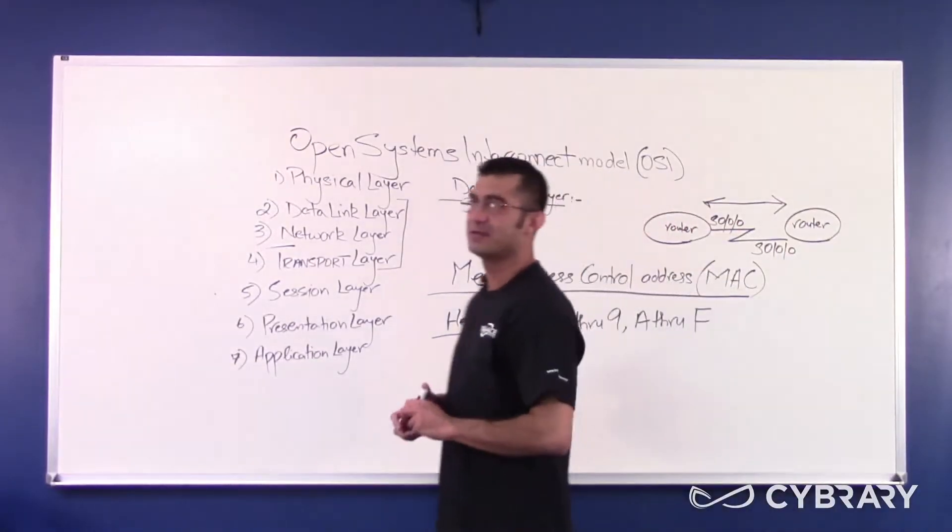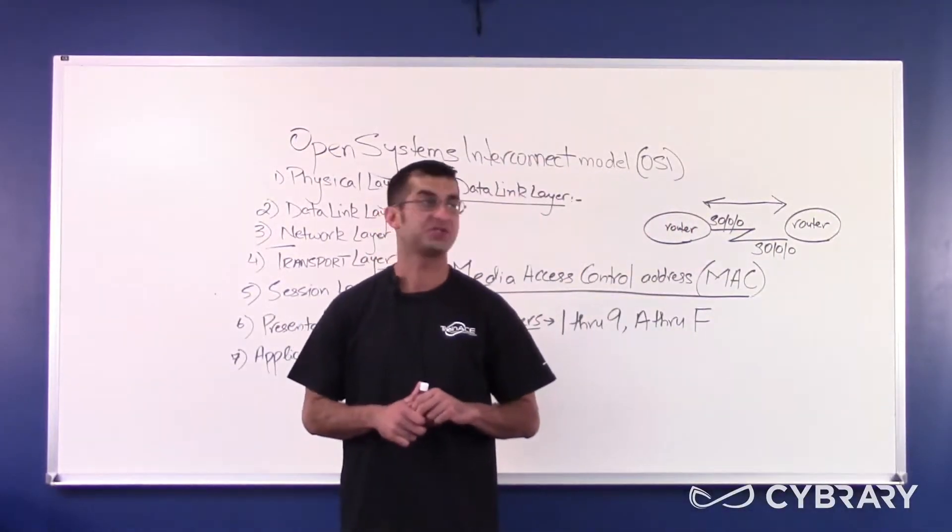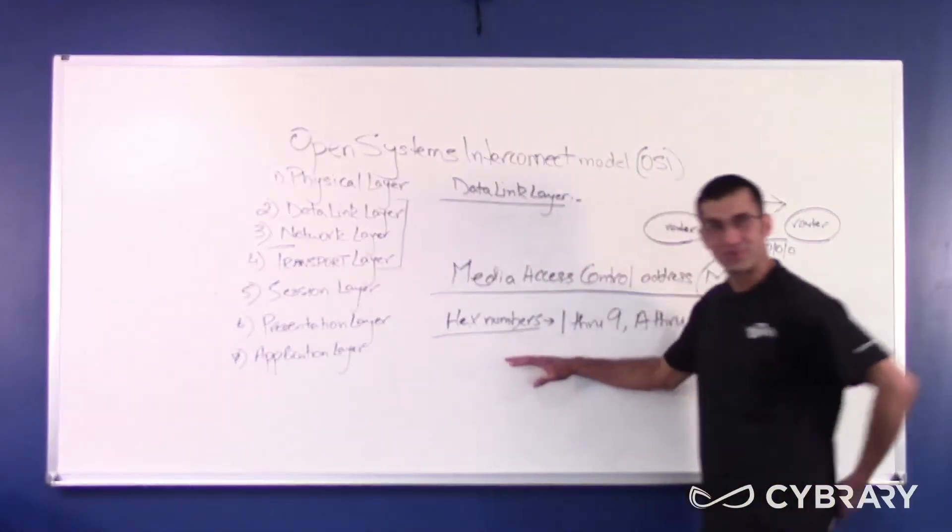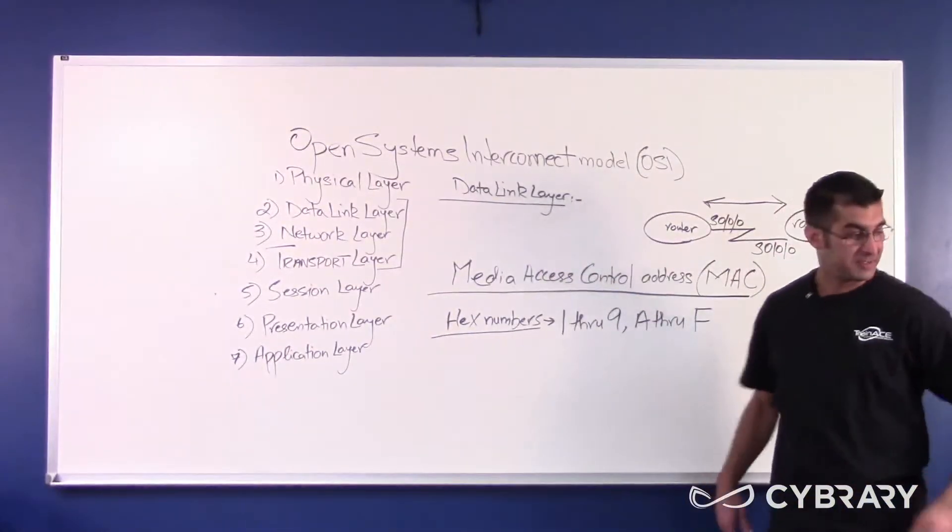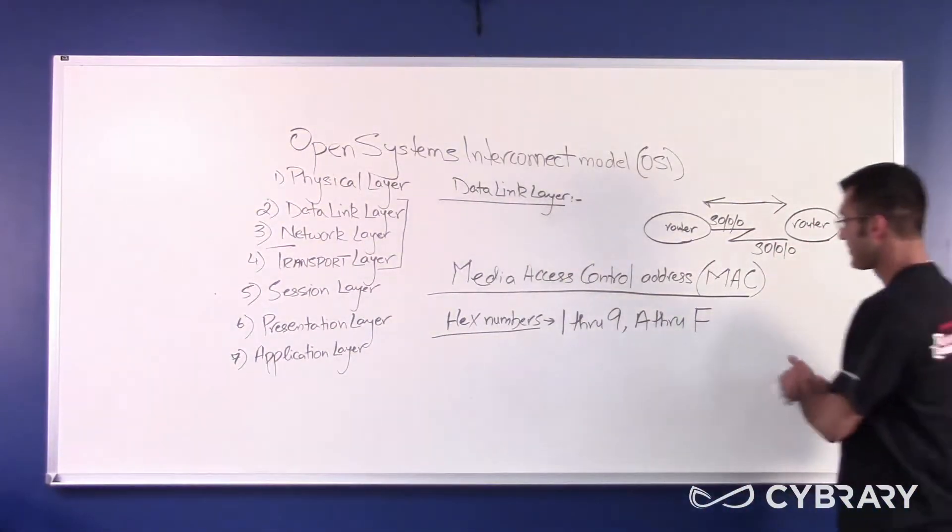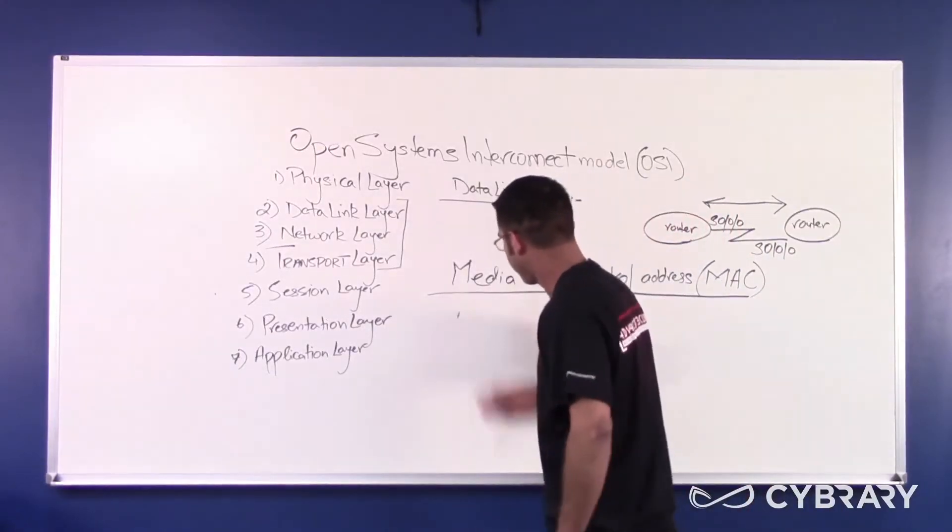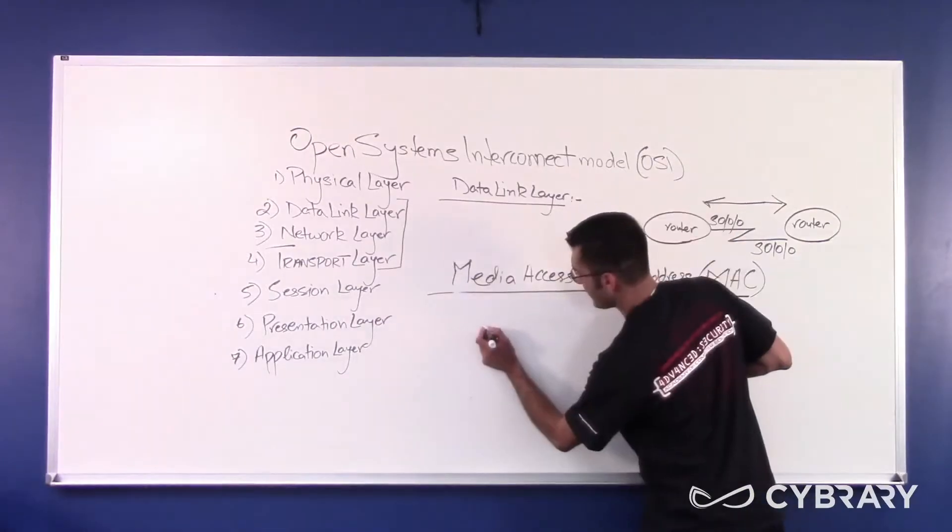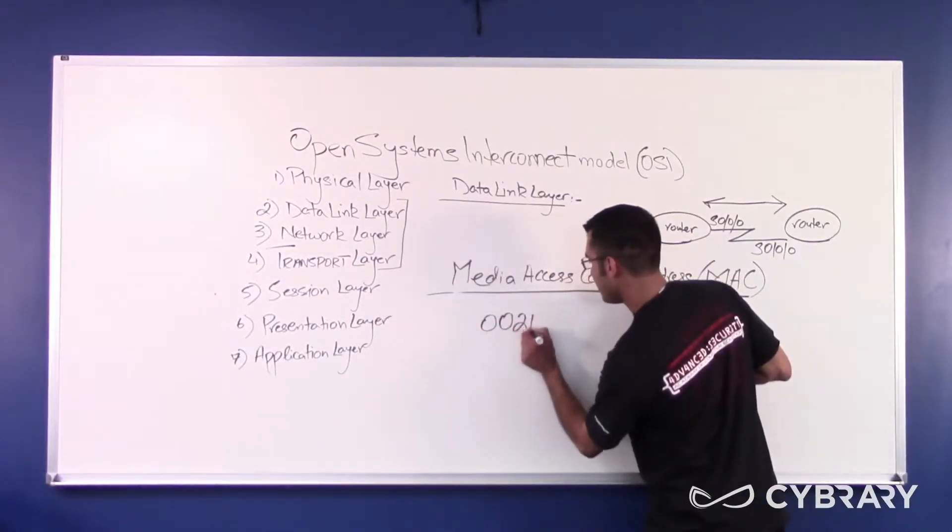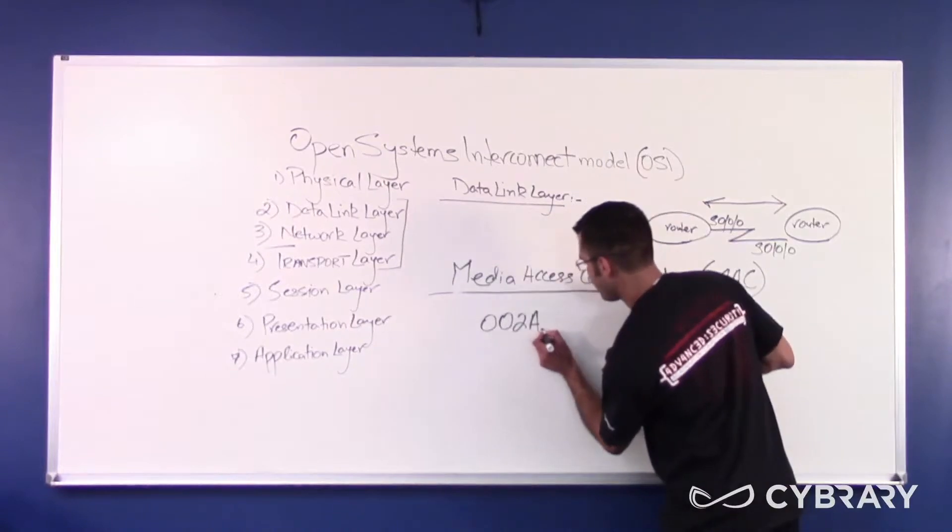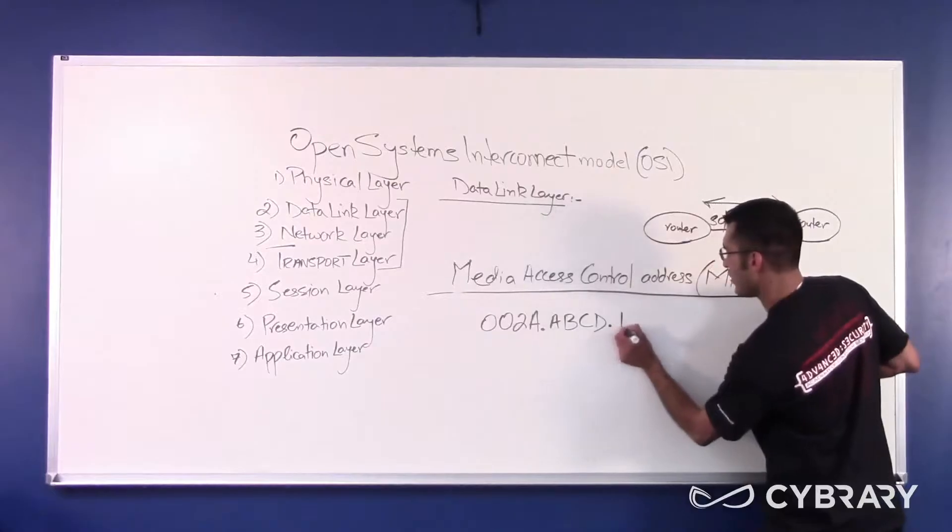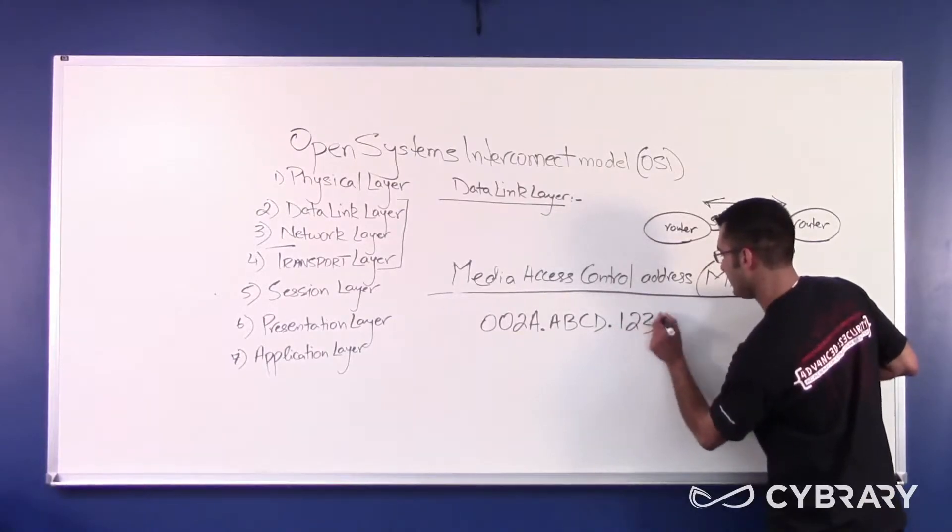What are hexadecimal numbers, or in short, what are hex numbers? Hex numbers range between 1 and 9 and then A through F. So hex numbers go 1 through 9 then A through F. If I wanted to say 10 in hexadecimal I would just say A. If I wanted to say 11 in hexadecimal I would just say B. An example of a MAC address would be 0 0 2 A A B C D 1 2 3 4.